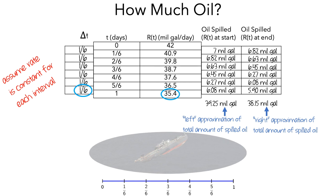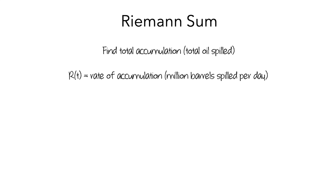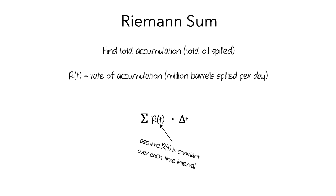I'll summarize the method described here. Anytime you add up products, you're using what's called a Riemann sum. Riemann sums tell you the total amount of something that will accumulate. You need information about the rate of accumulation; here it was in millions of gallons spilled per day. We assumed R was constant over each time interval, then multiplied R by the change in time and summed from 0 to 1 day. We got 39.25 million gallons with a left sum, or 38.15 million gallons with a right sum.